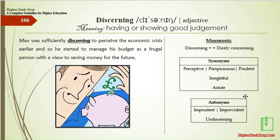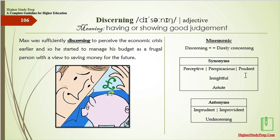Discerning means having or showing good judgment. Max was sufficiently discerning to perceive the economic crisis earlier, so he started to manage his budget as a frugal person with a view to saving money for the future. Mnemonic: discerning — direly concerning. The synonyms are perceptive, perspicacious, prudent, insightful, or astute. The antonyms of discerning are imprudent, improvident, or undiscerning.